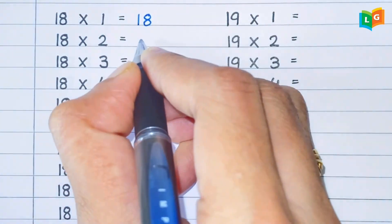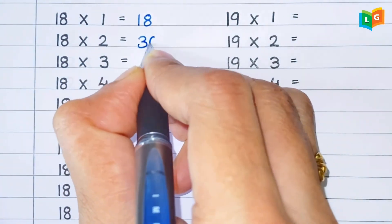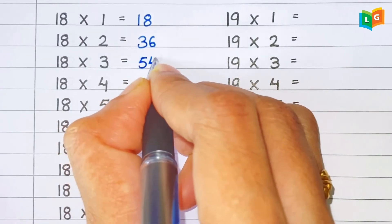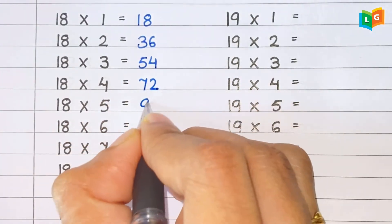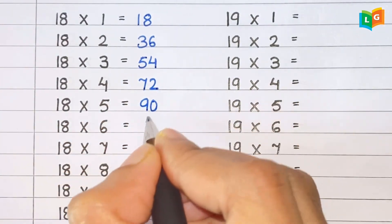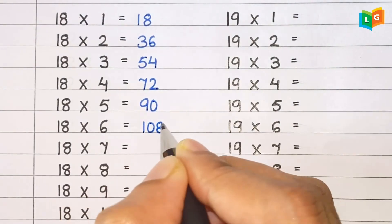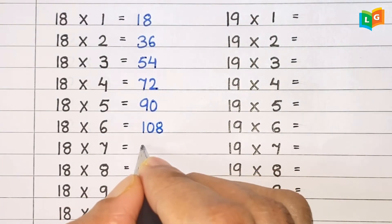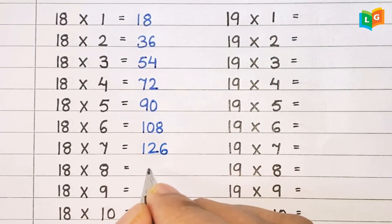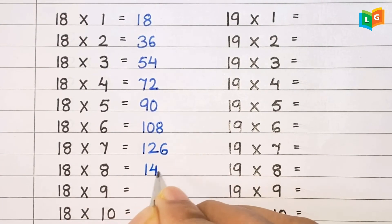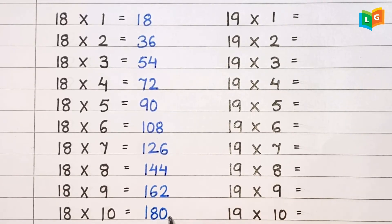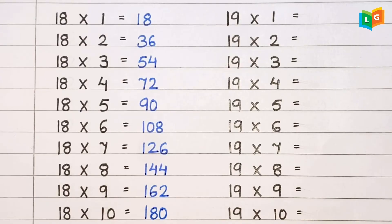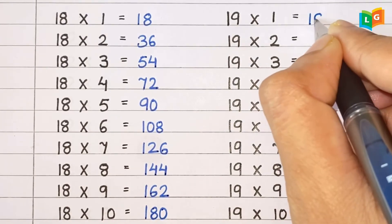Now let's see table of 18. 18 1s are 18, 18 2s are 36, 18 3s are 54, 18 4s are 72, 18 5s are 90, 18 6s are 108, 18 7s are 126, 18 8s are 144, 18 9s are 162, 18 10s are 180.